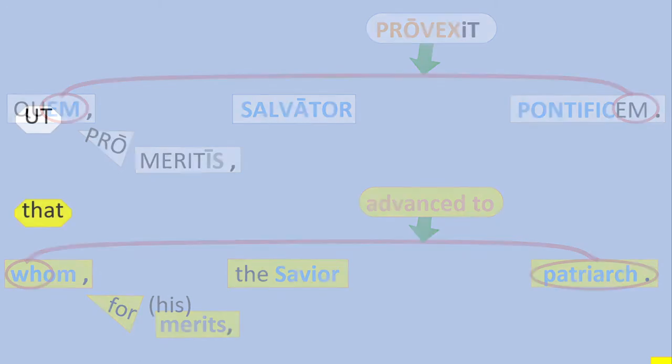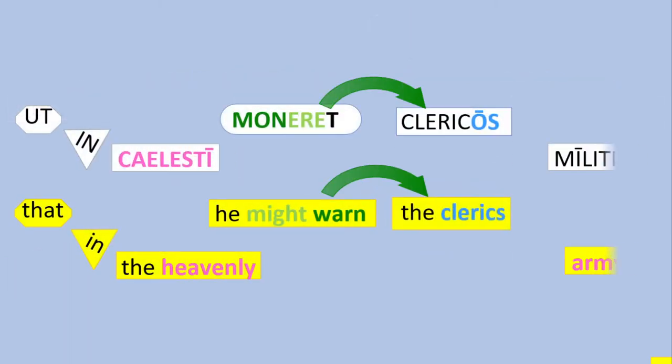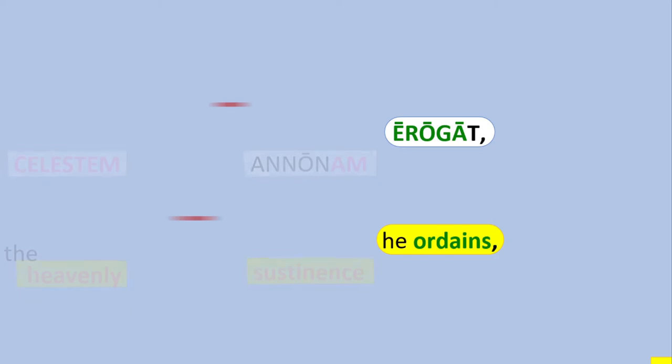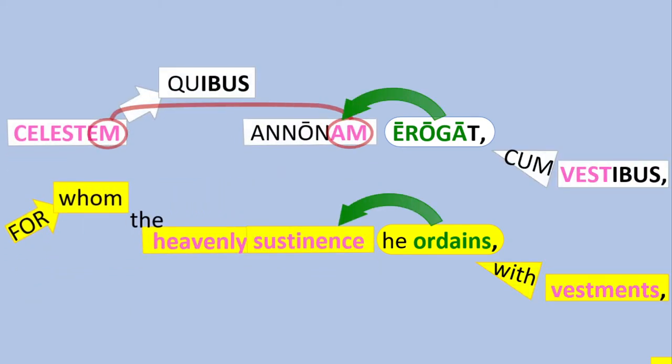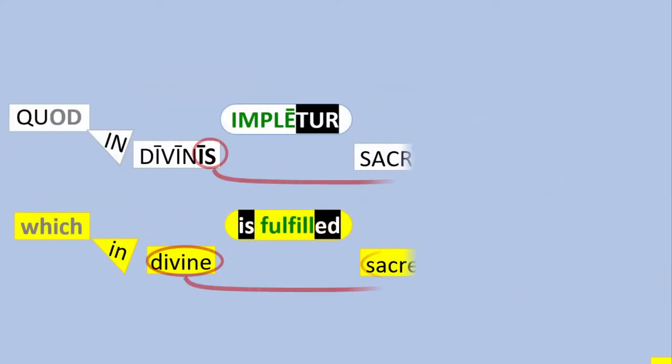quem promeritis salvatur provexit pontivecem, ut in caelis dimon erit clerclos melitia, caelestem quibus soa nonam erugat cum vestibus